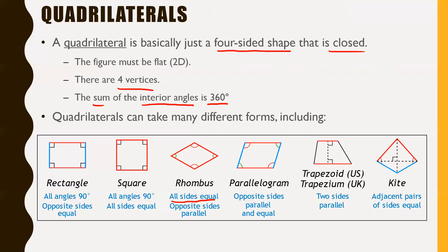Next is a parallelogram — kind of like a rectangle that someone sat on. You still have parallel sides: these two sides are parallel, these two sides are parallel, and they're not only parallel, they're also equal. And of course, you've got some angles that aren't 90 degrees in the corners. That makes it a parallelogram.